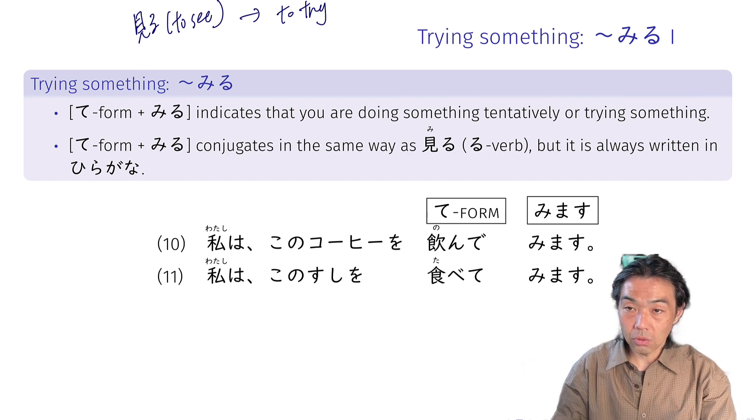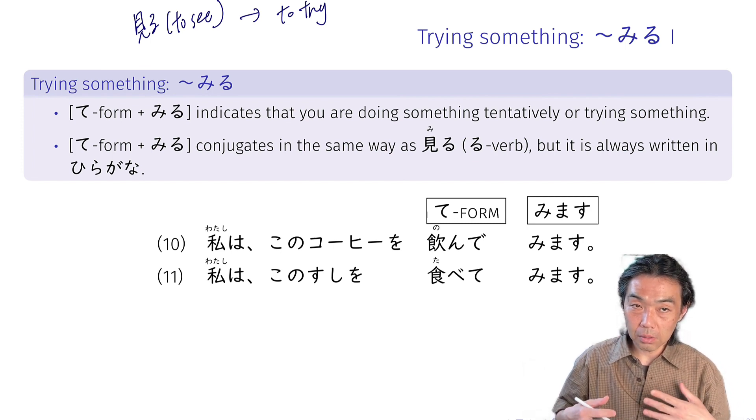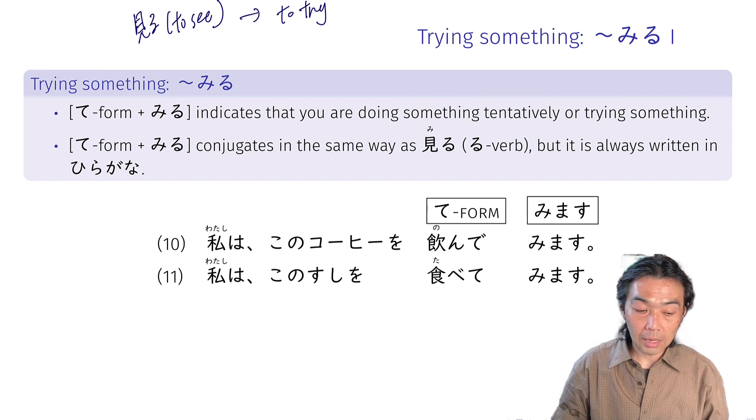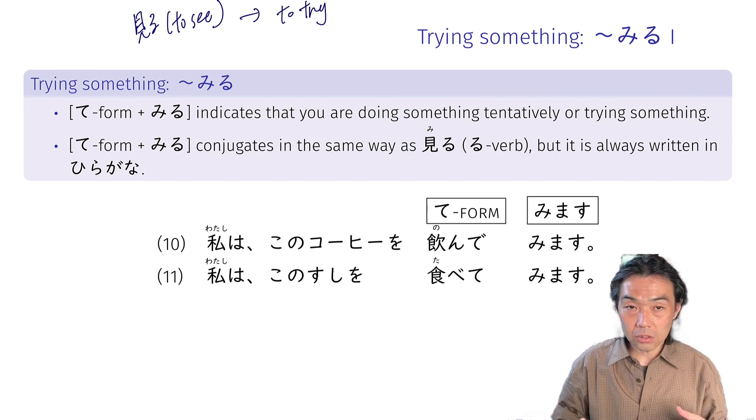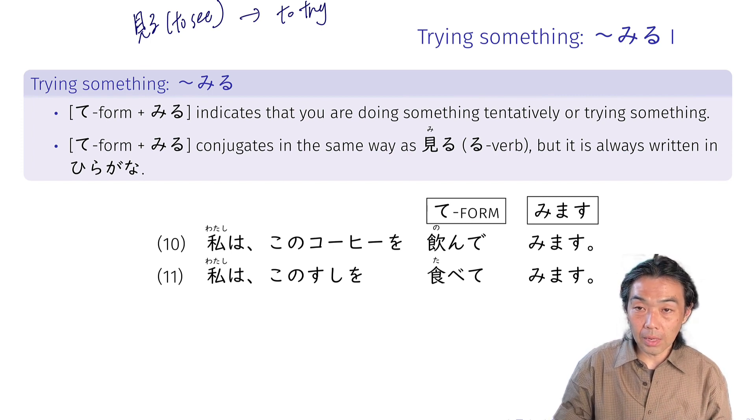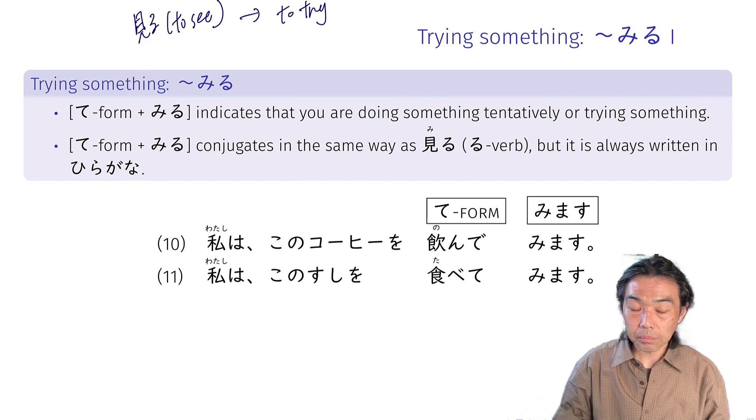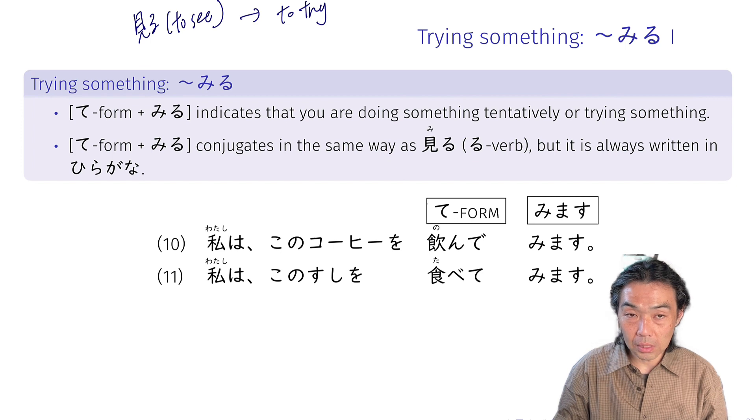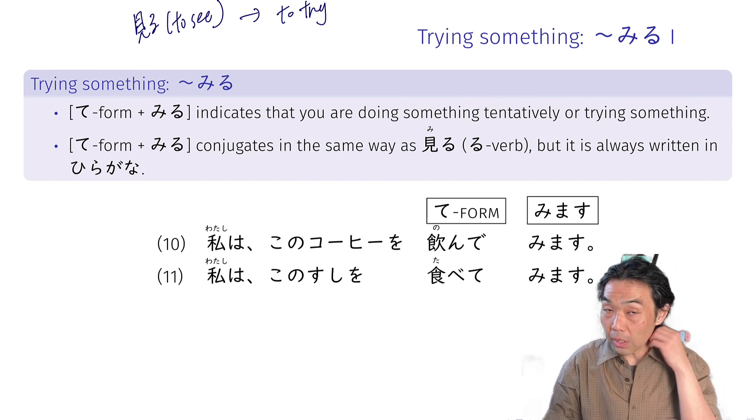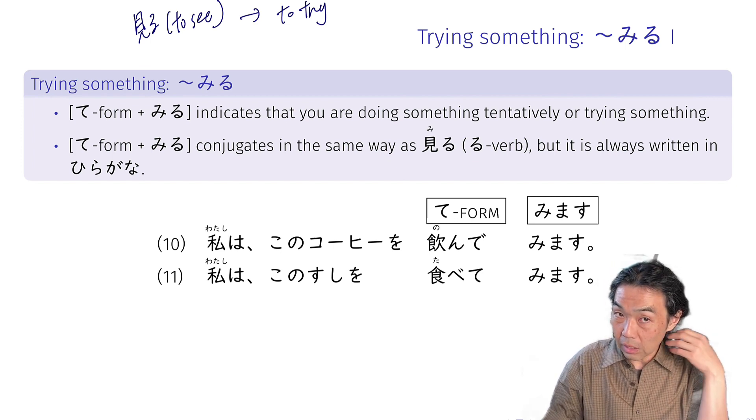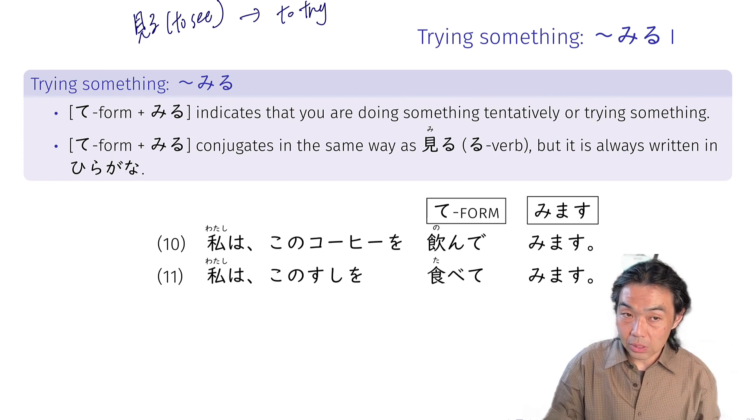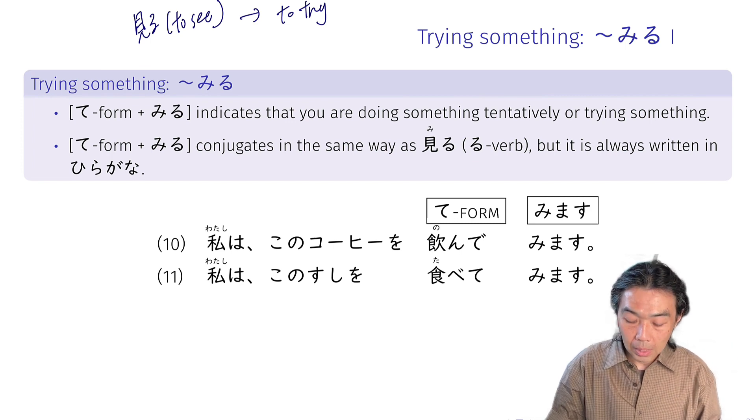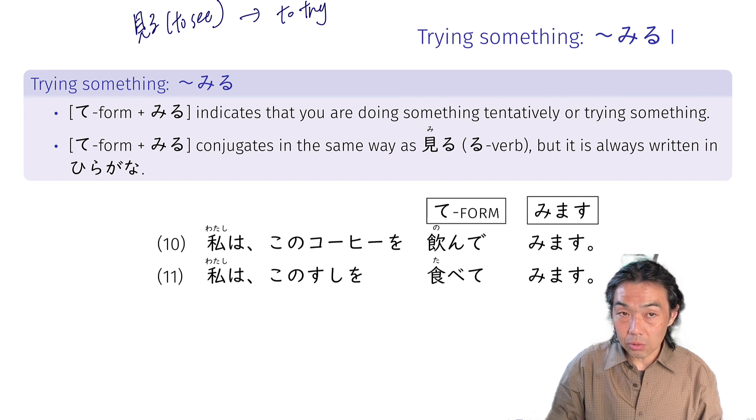Instead of to see, you indicate doing something just as an experiment, experimentally doing it. So in English, we usually indicate the same meaning by saying try doing something. That's the usage.